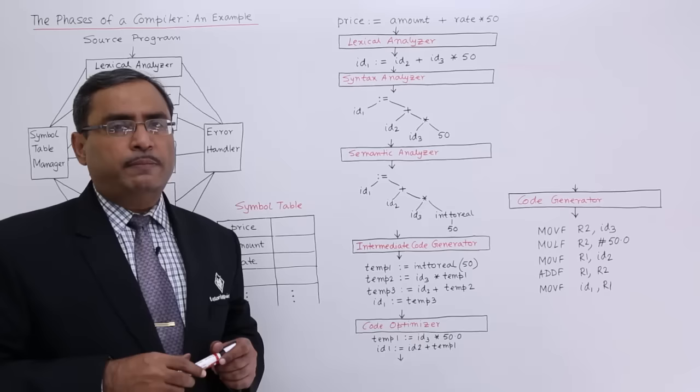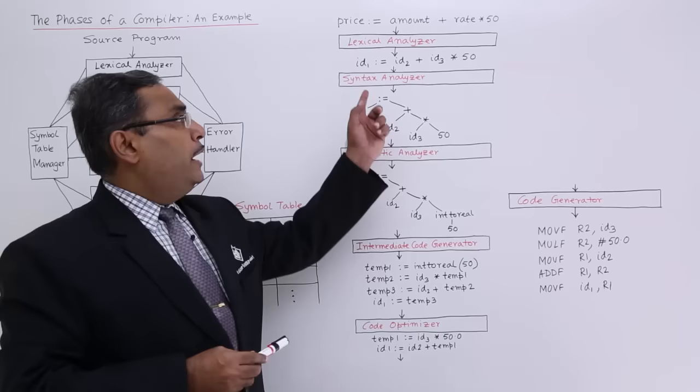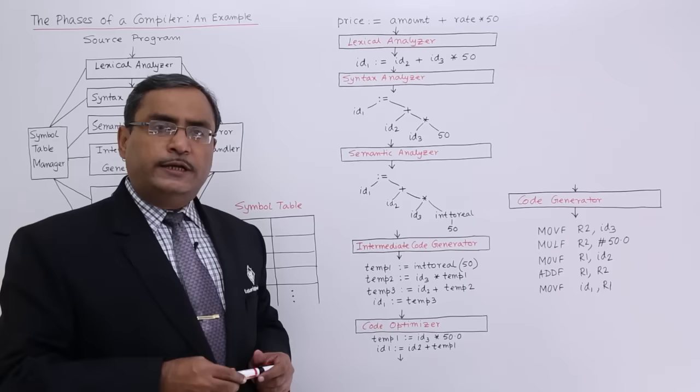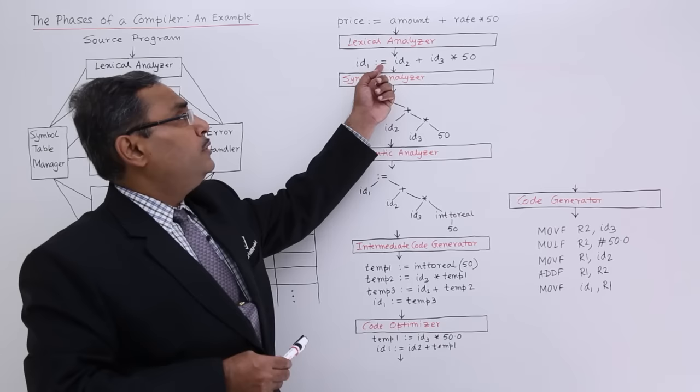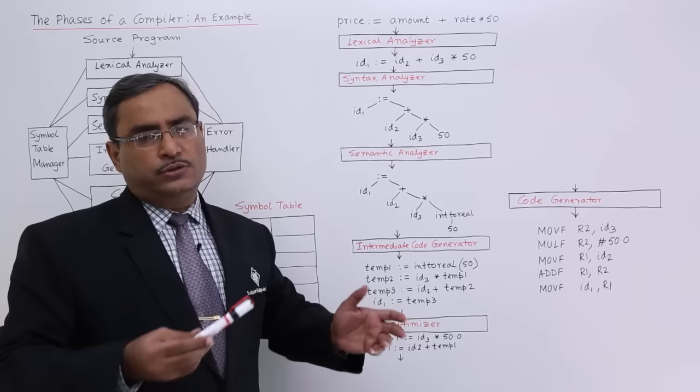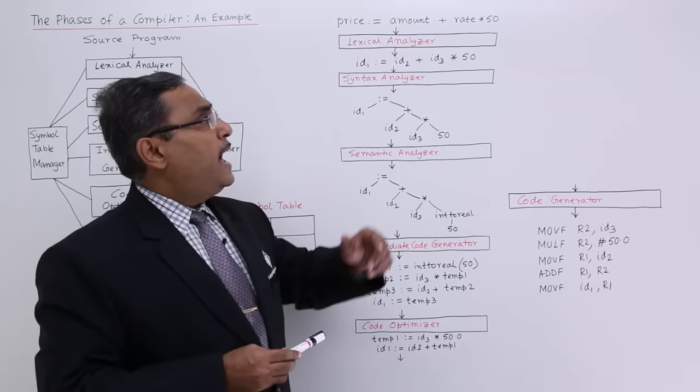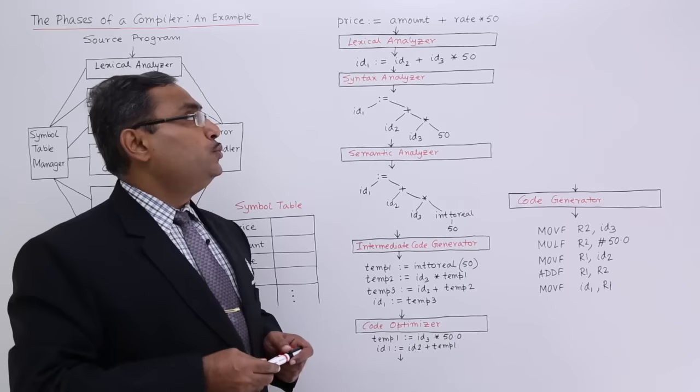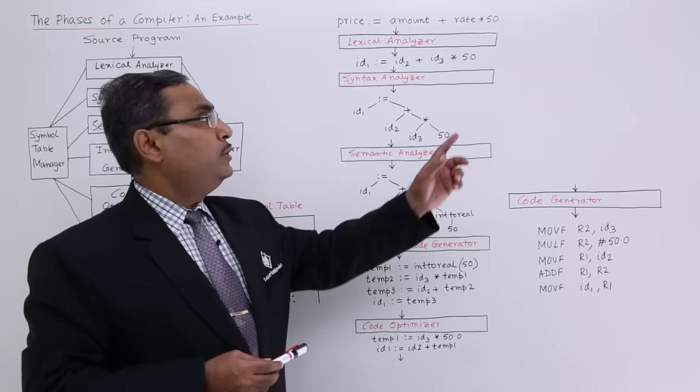The lexical analyzer will take this particular statement as input and produce a series of tokens as output. Price is detected as identifier 1 (identifier means variable), := is kept as the assignment operator, amount is detected as identifier 2, plus is kept as is, rate is detected as identifier 3, * is kept, and 50 is taken as an integer constant. This is the output of the lexical analyzer.